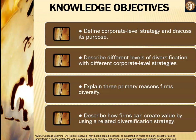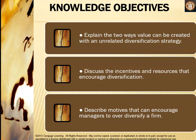The objectives for this chapter are to define corporate level strategy and discuss its purpose, describe different levels of diversification with different corporate level strategies, explain three primary reasons firms diversify, describe how firms can create value by using a related diversification strategy, explain the two ways value can be created with an unrelated diversification strategy, and discuss the incentives and resources that encourage diversification, including motives that can lead managers to over-diversify a firm.